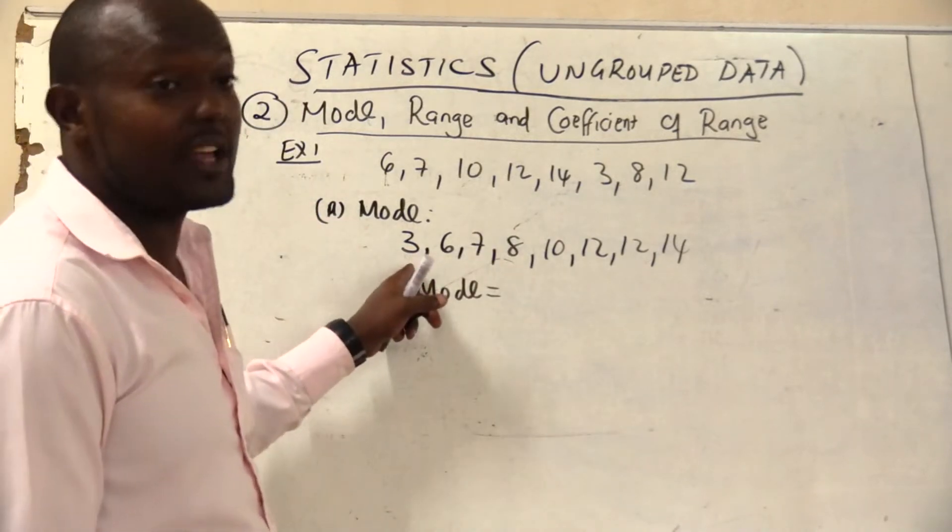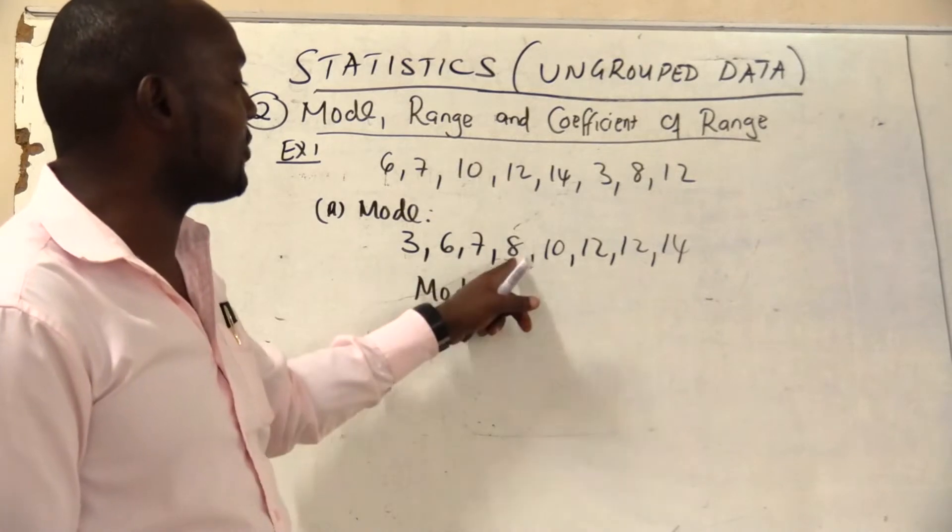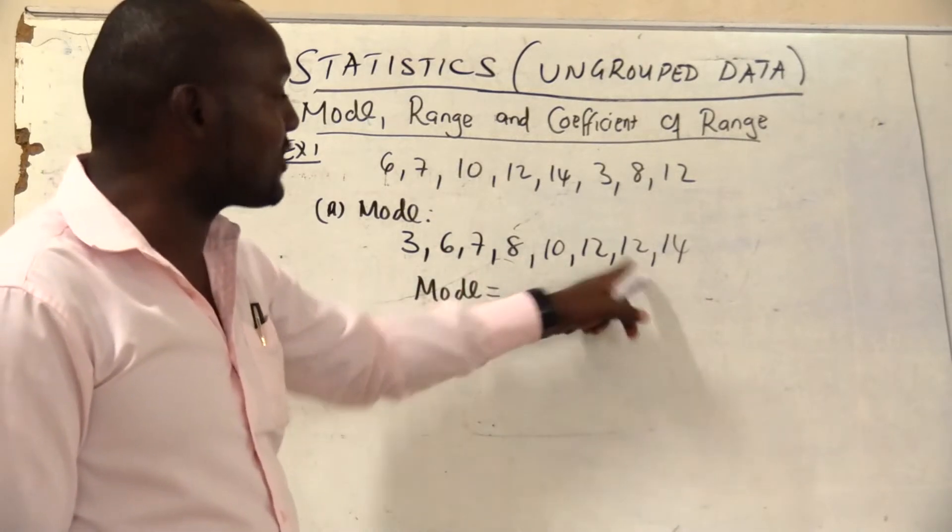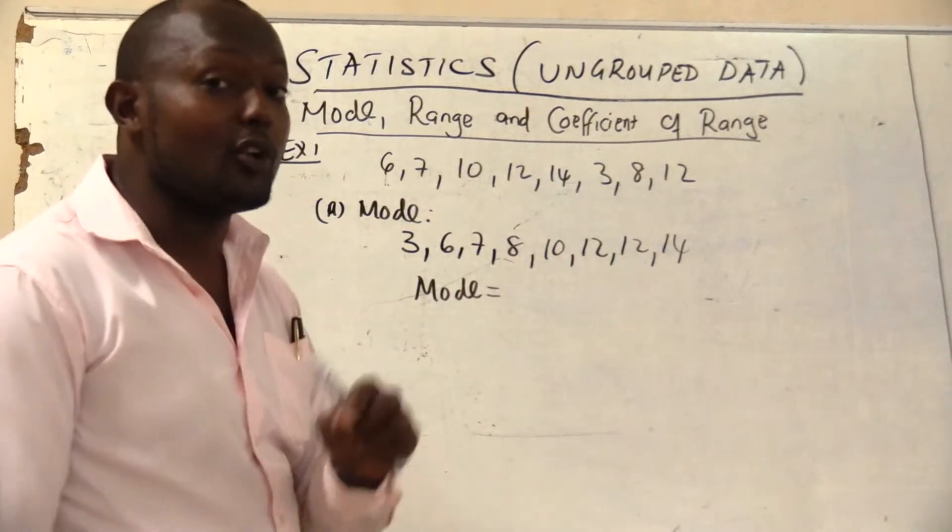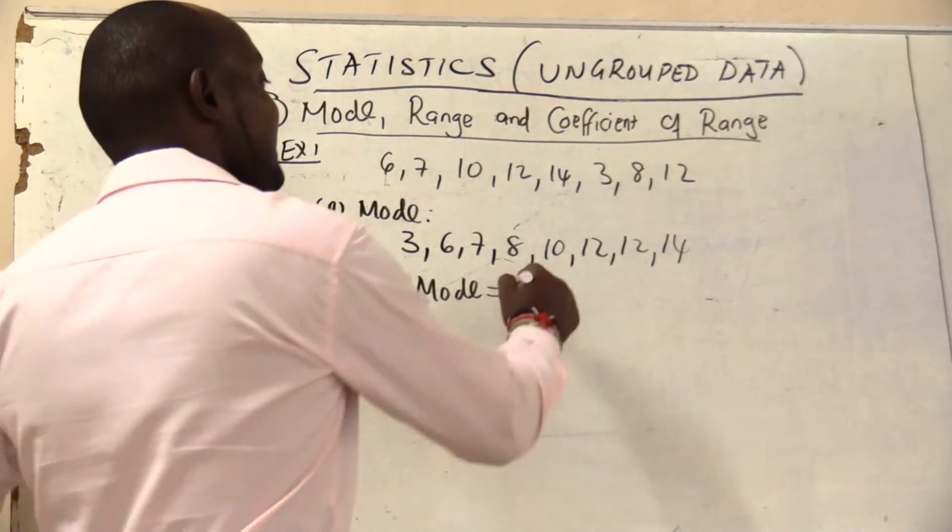You find that 3 is occurring once, 6 once, 7 once, 8 once, 10 once, but you find that 12 is occurring twice and 14 once. So in this case my most occurring number is 12.